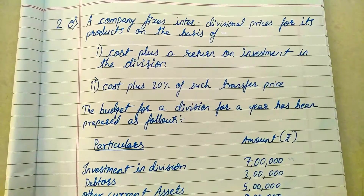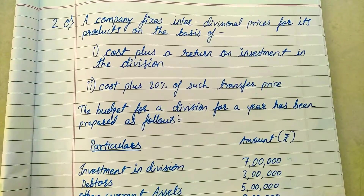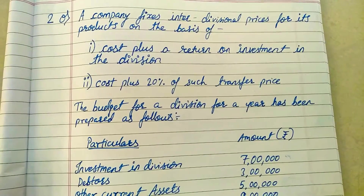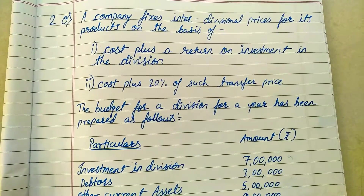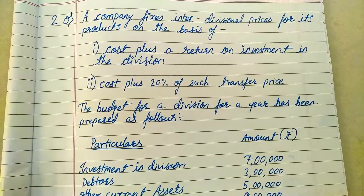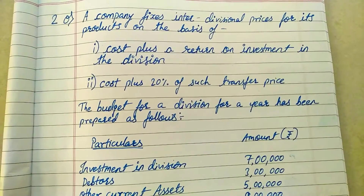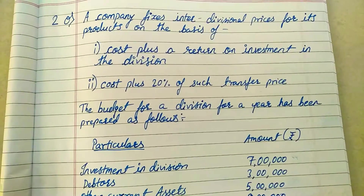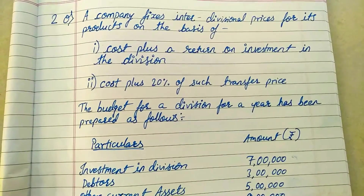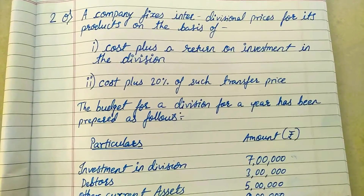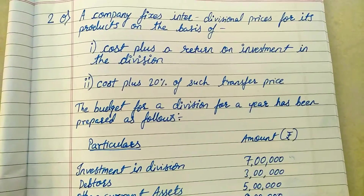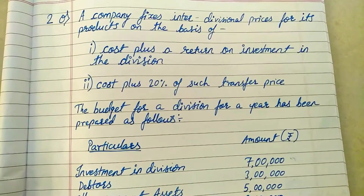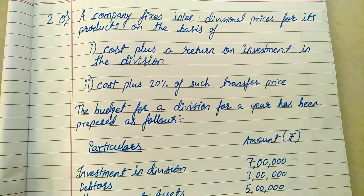A company fixes its inter-divisional prices for its products on the basis of cost plus a return on investment in the division, and cost plus 20 percent of such transfer price. So there are two criteria — two methods — that are used to fix the transfer prices within the organization. Inter-divisional prices means those are your transfer prices.